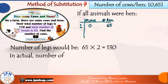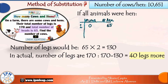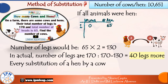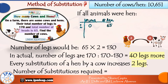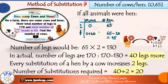But the number of legs given is 170, which means 170 minus 130, that is 40 legs are extra. Now let us substitute a hen with a cow. With the 2 legs of a hen gone and the 4 legs of a cow added, there is a net increase of 2 legs per substitution. So in order to account for the 40 extra legs, we need 40 divided by 2 equals 20 substitutions. We simply substitute 20 hens with 20 cows, and that is our answer — after 20 substitutions, there are 20 cows in the farm.